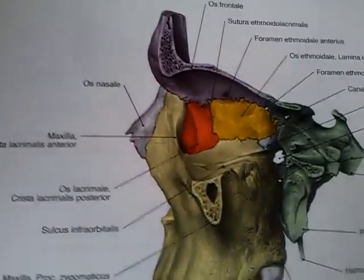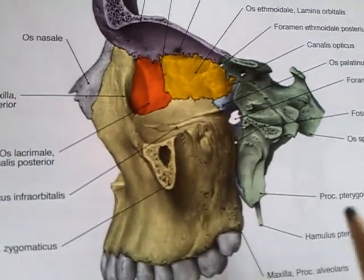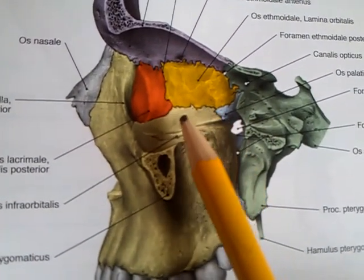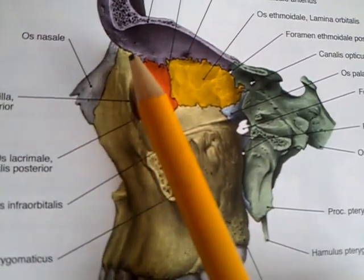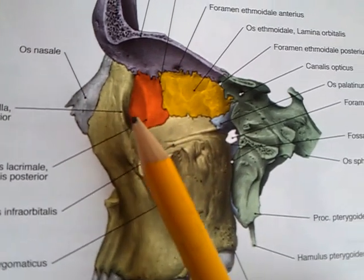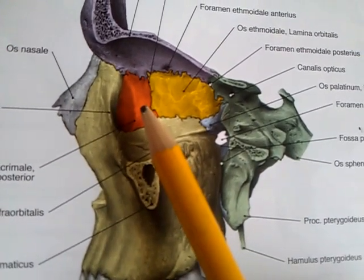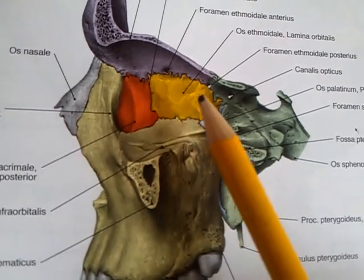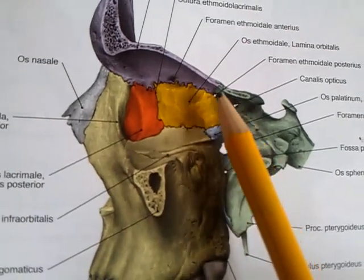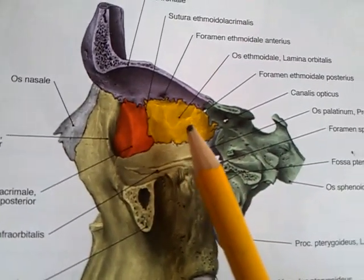Then you have the medial wall, which consists of the maxilla — the frontal process — the lacrimal bone, and the ethmoid bone, specifically the lateral plate of the labyrinth.